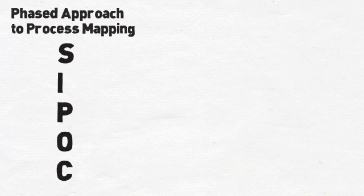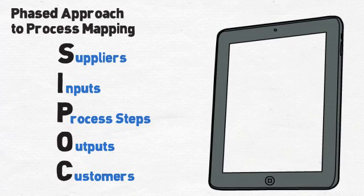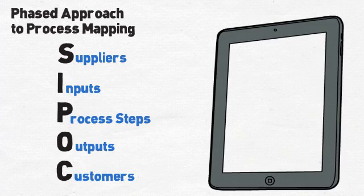At Harrison Street University, we like to follow a phased approach to process mapping, to ensure we are focusing on the things that matter most throughout the process. The first step for process mapping is creating a SIPOC, which is an acronym for the parts of the tool: Suppliers, Inputs, Process Steps, Outputs, and Customers. A completed SIPOC gives the team a bird's-eye view of a complex process, showing that at a high level, many processes are the same and can be categorized into major steps.